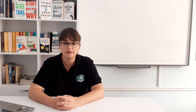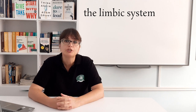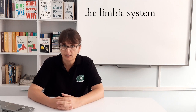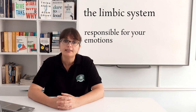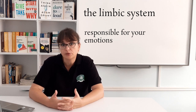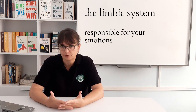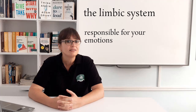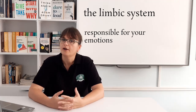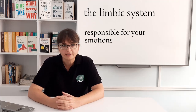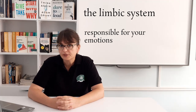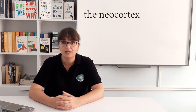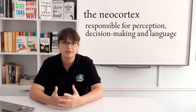Then the limbic system developed — the emotional part of the brain — sitting on top of the reptilian brain. It developed in the first mammals; reptiles do not have it. This is the part responsible for our fears, anxieties, and all the emotions we experience. Finally, the neocortex is the most recently evolved part of the brain.